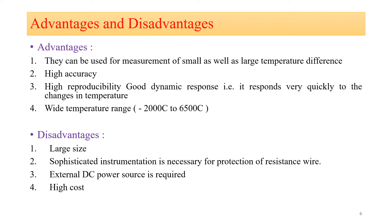The advantages of RTD are: it can be used for measurement of small as well as large temperature differences; they are highly accurate; high reproducibility; good dynamic response — it responds very quickly to temperature changes; and a wide temperature range of approximately -200°C to 650°C. Disadvantages include: large size; sophisticated instrumentation is necessary for protection of the resistance wire; it requires an external DC power supply; and high cost.